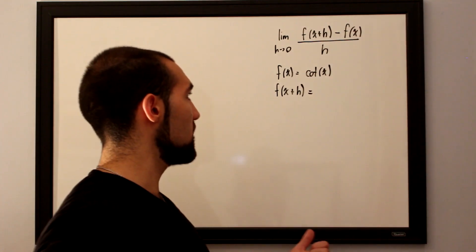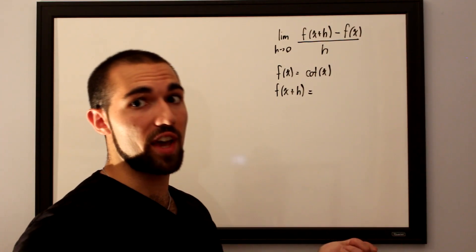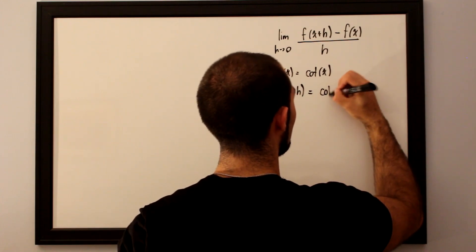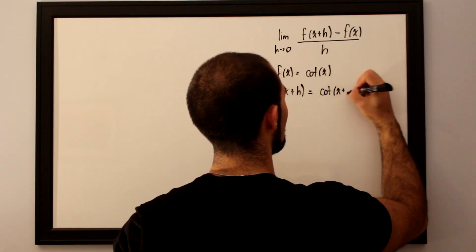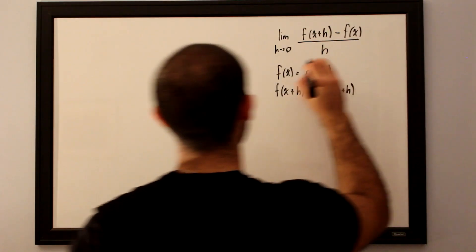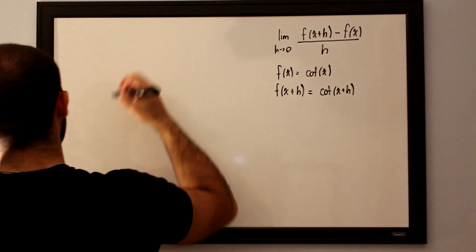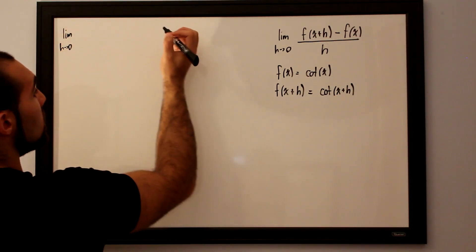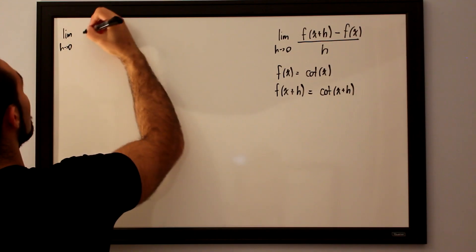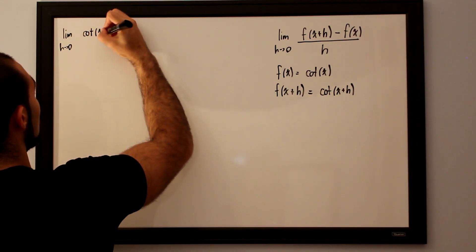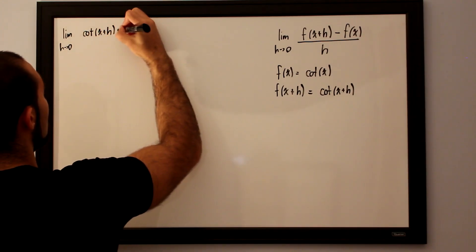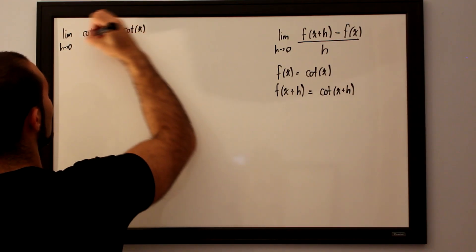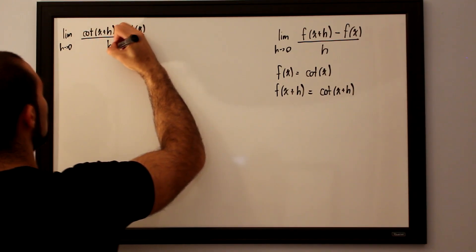Our f of x plus h will be cotangent of x plus h. So now we're ready and we can plug things into the formula. We want to take the limit as h approaches 0 for cotangent of x plus h minus cotangent of x, all divided by h.